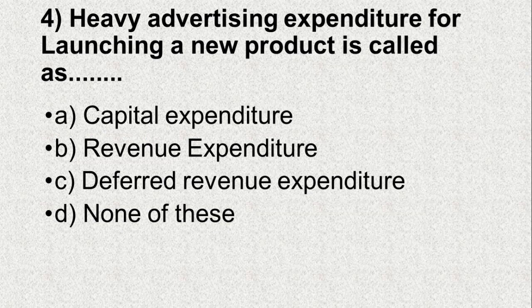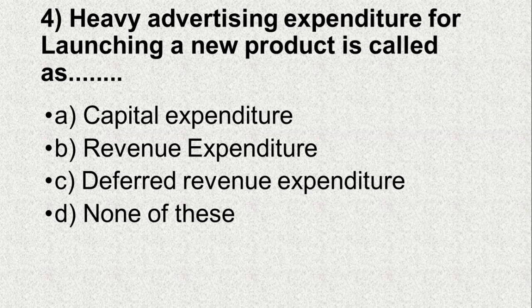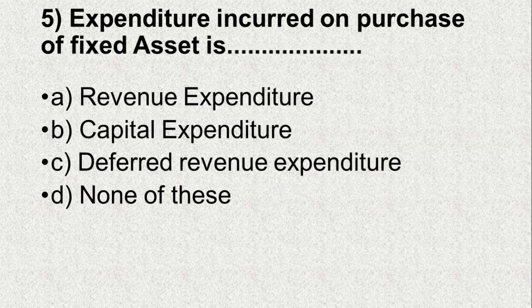Question number 4. Heavy advertising expenditure for launching a new product is called as — Option A: Capital expenditure, B: Revenue expenditure, C: Deferred revenue expenditure, D: None of these. And the correct answer is C, Deferred revenue expenditure.